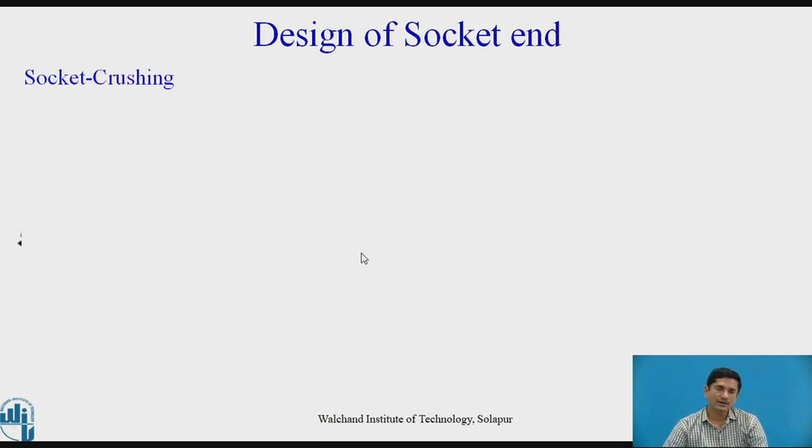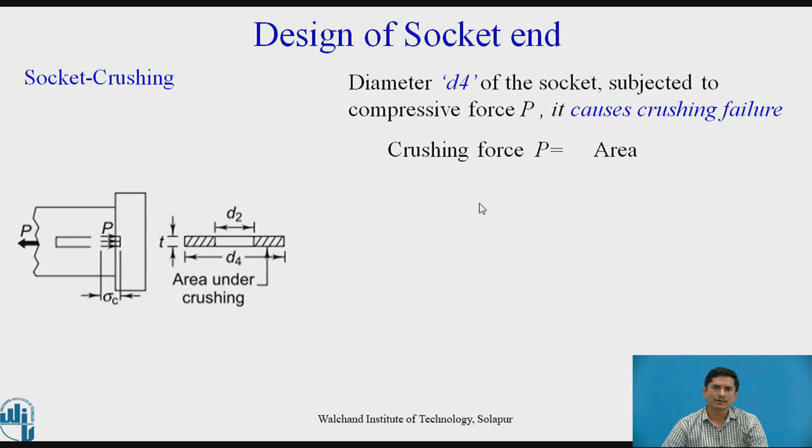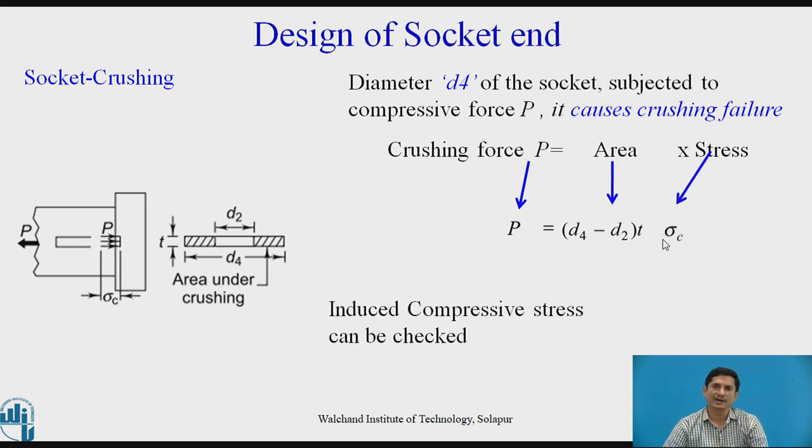Socket under crushing. Socket under crushing, I can establish similar equation. This zone is under compression. I need to establish the area. The only change is in the area. Outer diameter is D4, inner diameter is D2. (D4 - D2) into T is the area that is resisting the crushing failure multiplied by σ_C. We can here check the compressive stress which is induced in the socket.